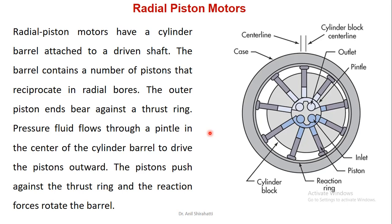Next is the radial type piston motor. In this picture you can see the casing centerline and the cylinder block centerline — they are not on the same axis. The components include the pintle, inlets, outlets, pistons, the reciprocating ring, and the cylindrical block. Radial piston motors have a cylinder barrel attached to the driven shaft. The barrel contains a number of pistons that reciprocate in radial bores. The outer pistons bear against a thrust ring. Pressure fluid flows through a pintle in the center of the cylinder barrel to drive the pistons outboard. The pistons push against the thrust ring and the reaction force rotates the complete barrel.